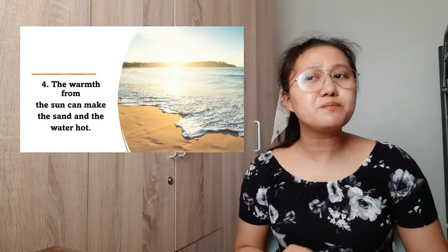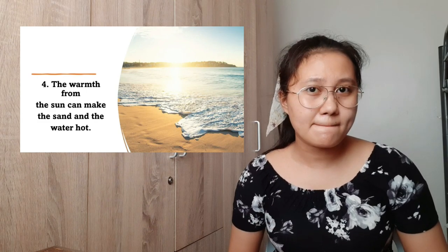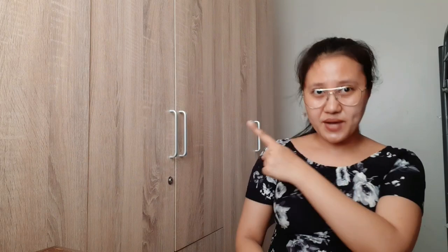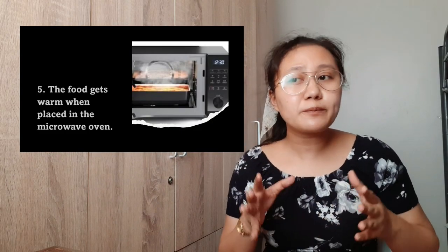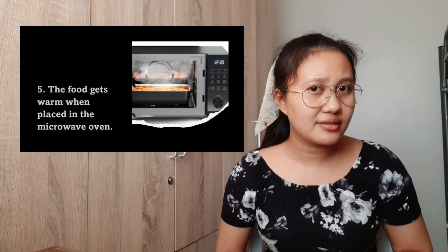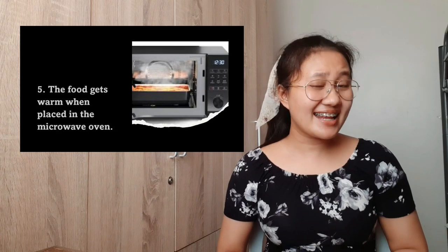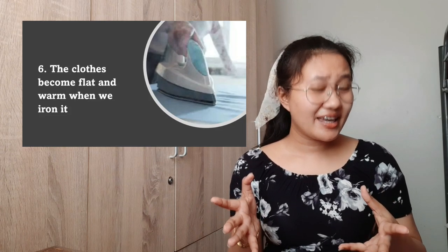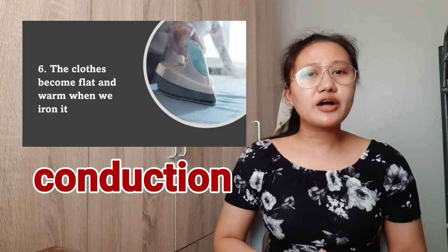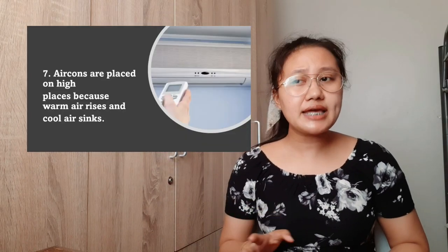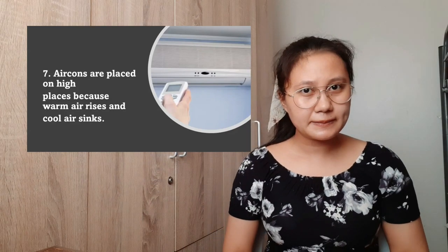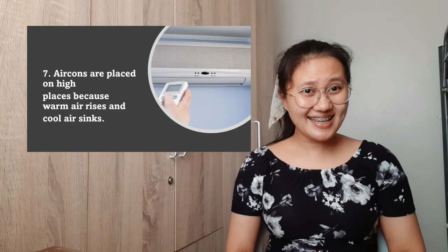Number four: the warmth from the sun makes the sand and water hot — that is radiation. Number five: food gets warm when placed in a microwave oven — that is also radiation. Number six: clothes become flat and warm when ironed — that is conduction, because there is direct contact. Number seven: air conditioners are placed in high places because warm air rises and cool air sinks — that is convection.